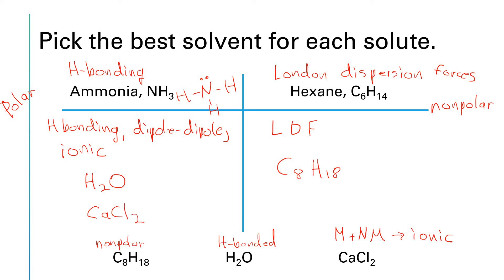So to summarize, calcium chloride and water are most likely to dissolve in ammonia. And octane C8H18 is most likely to dissolve in hexane.